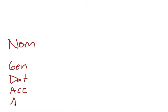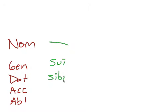So let's give the forms of the reflexive pronoun. There is no nominative, so I'm going to put a big fat line there. The genitive is sui, the dative is sibi, the accusative is se, and the ablative is se. So it's sui, sibi, se, se.